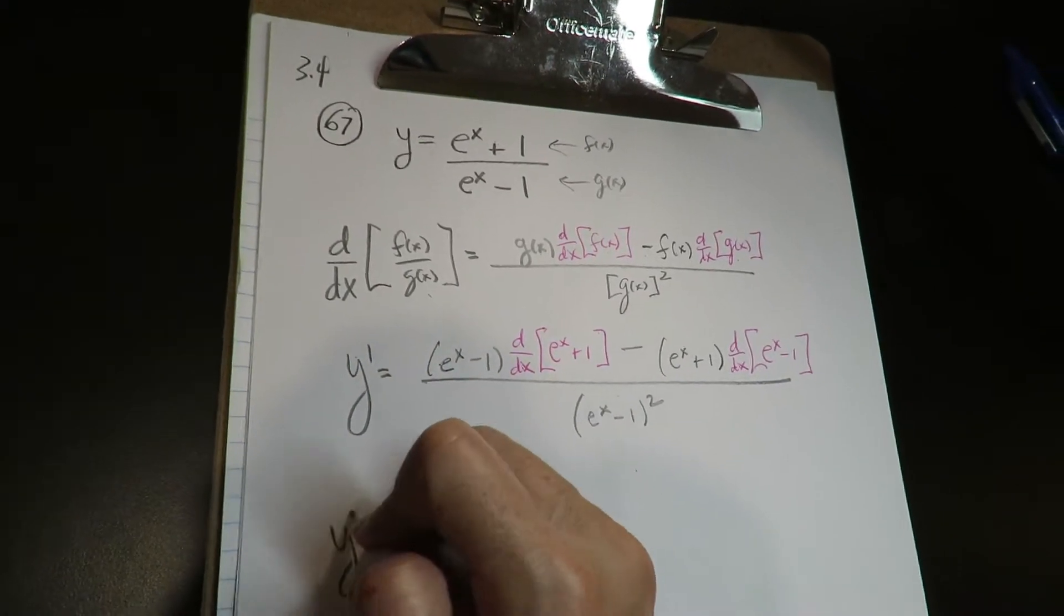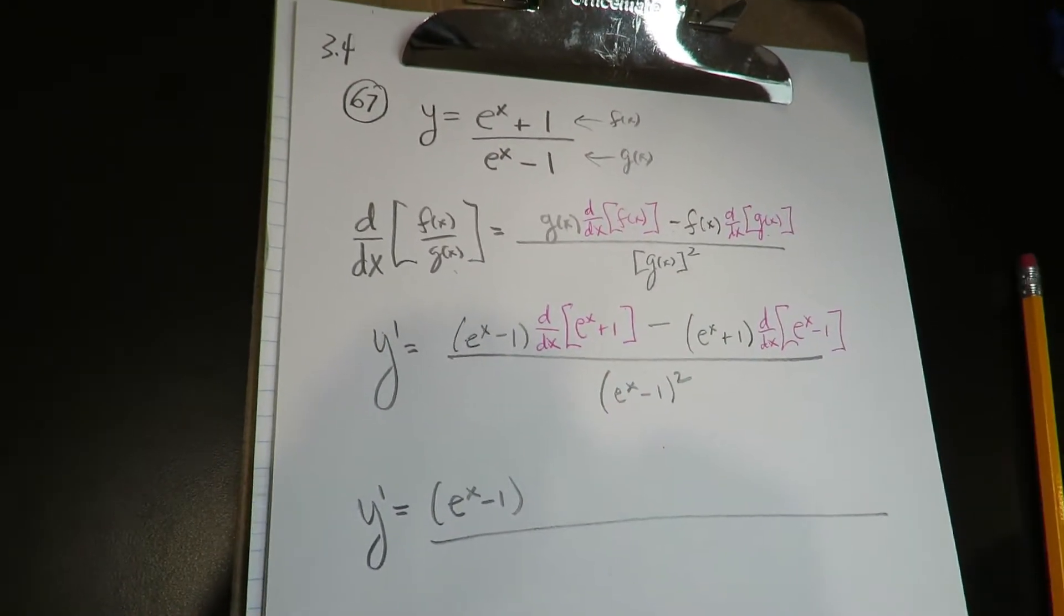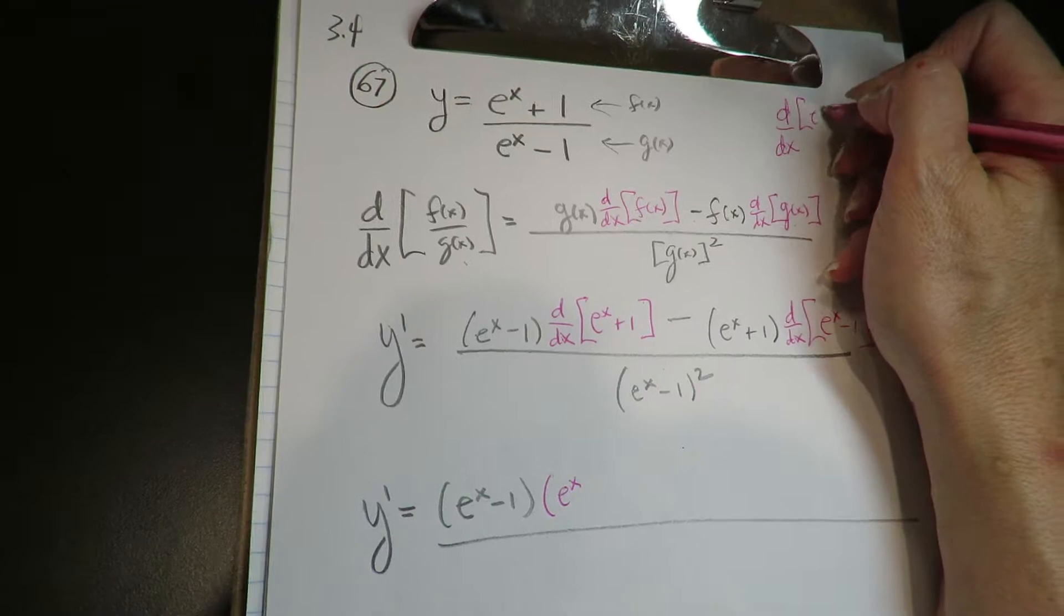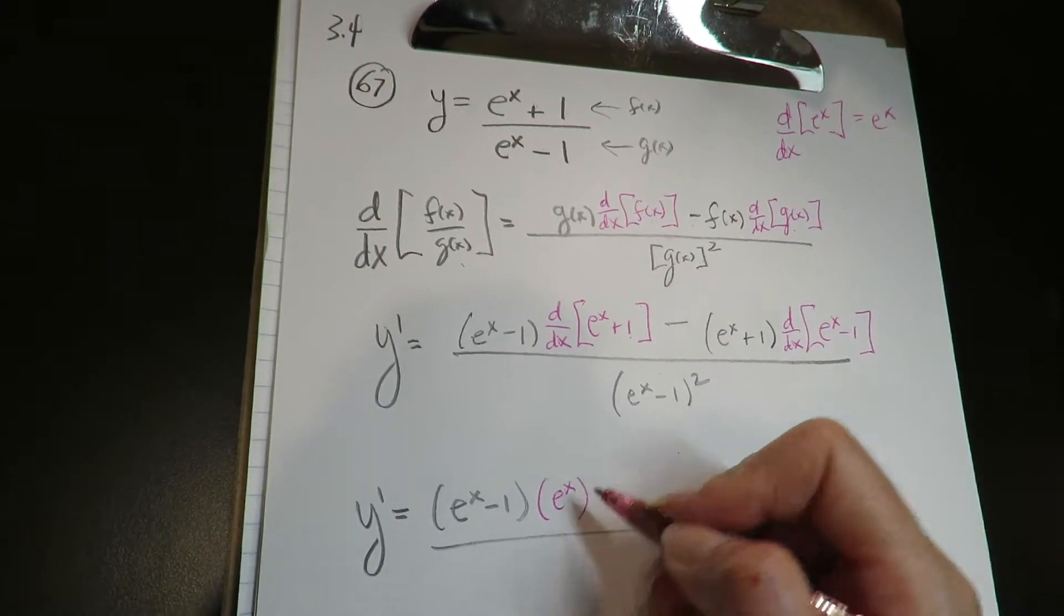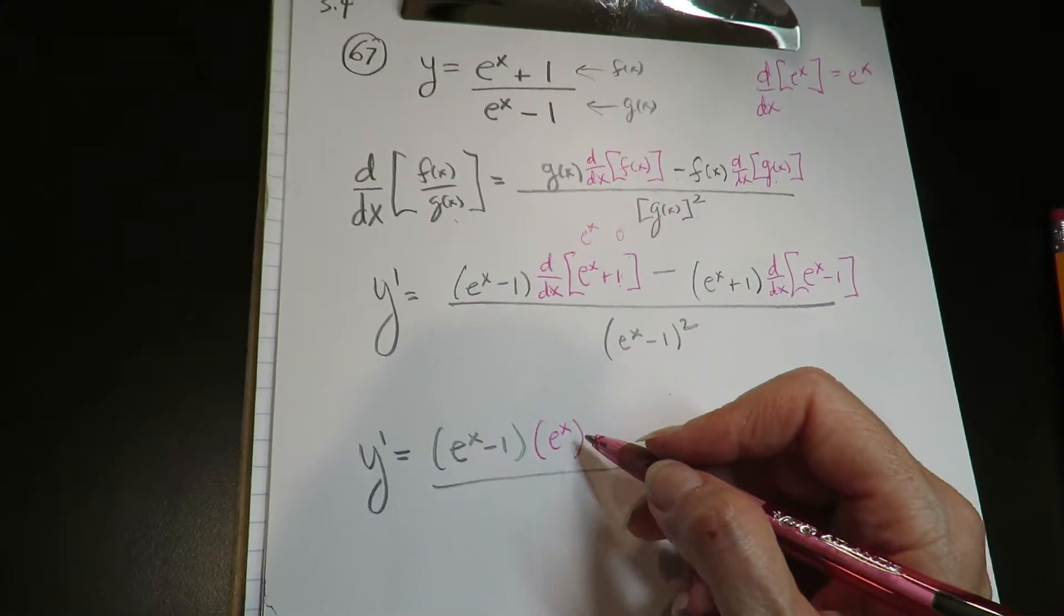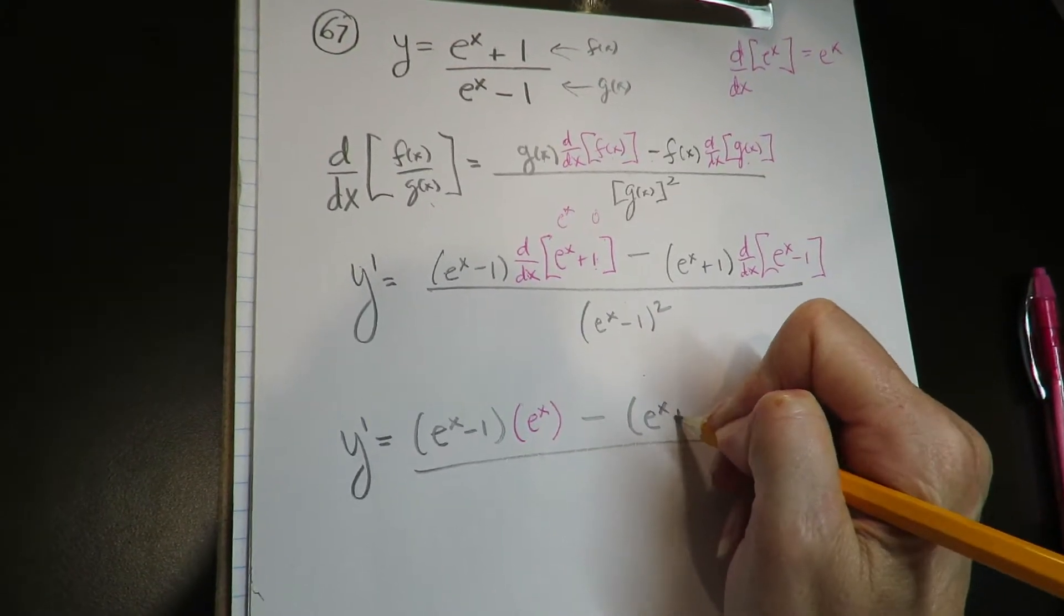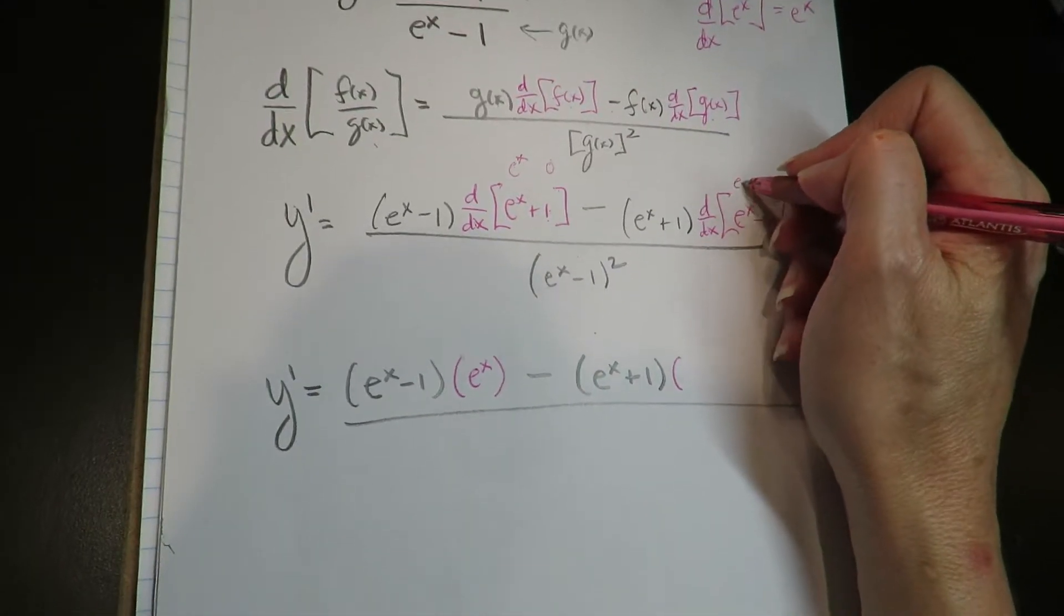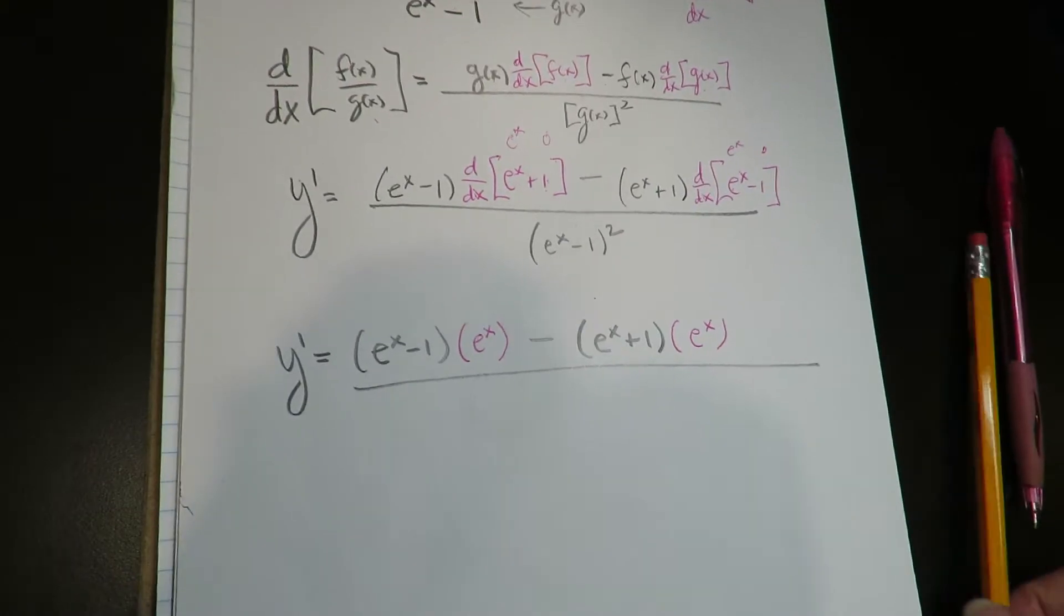Now I'll go ahead and do those little subparts in there. The derivative of e to the x is e to the x. Derivative of 1 is 0, so the derivative of this guy is e to the x. Derivative of e to the x is again e to the x. Derivative of negative 1 is 0, so all you have left there is e to the x.